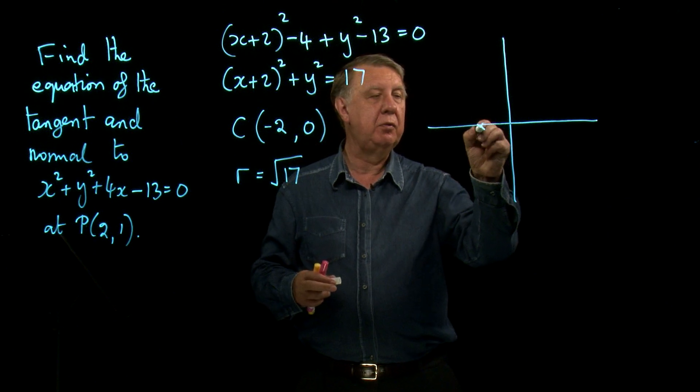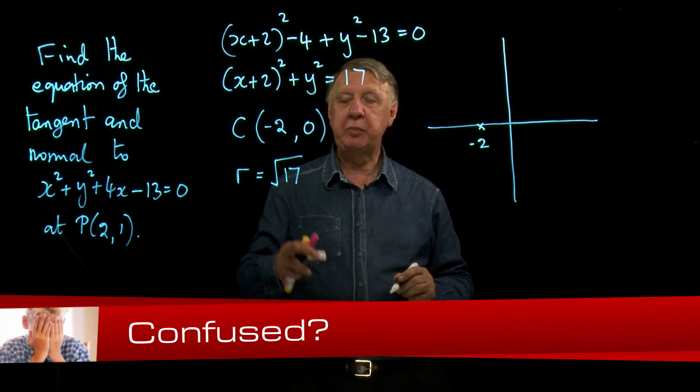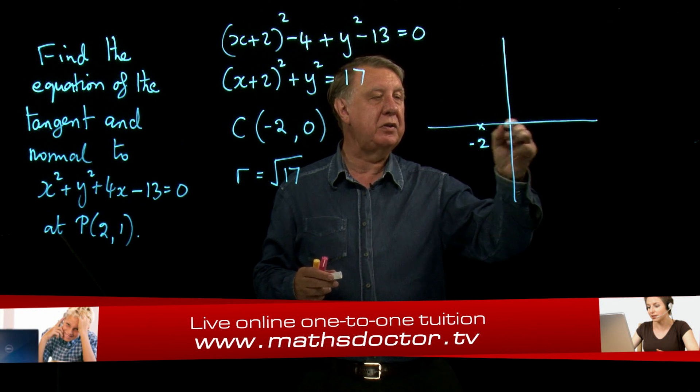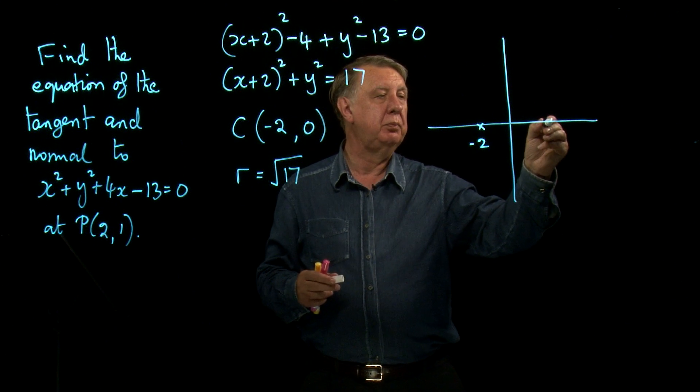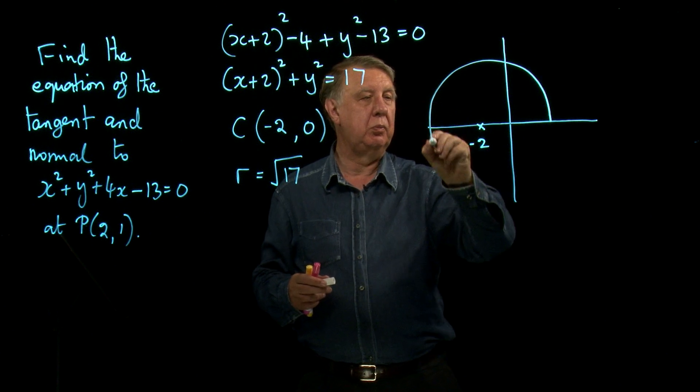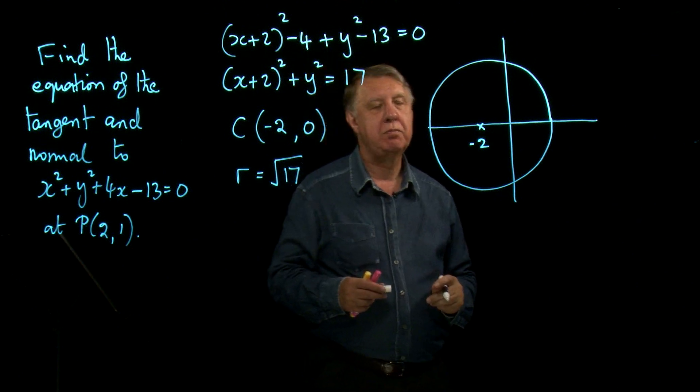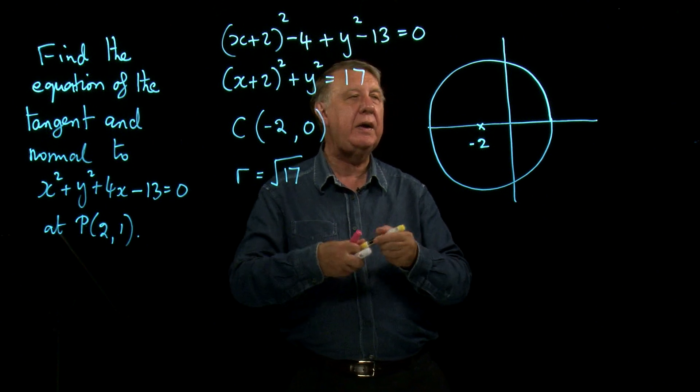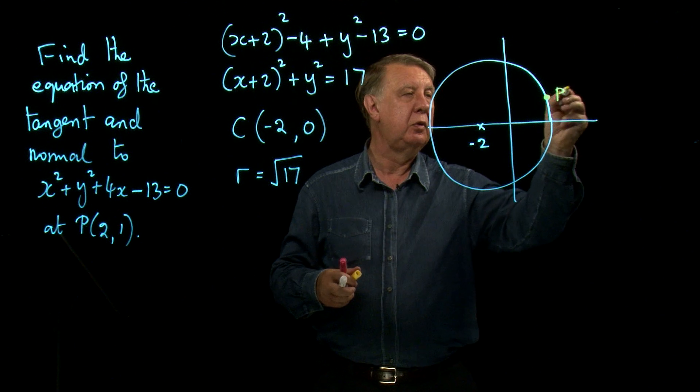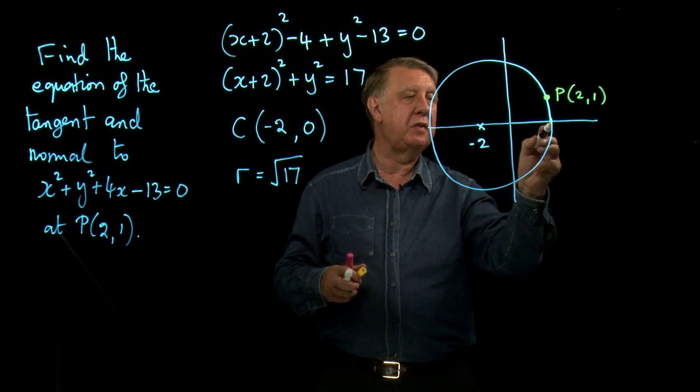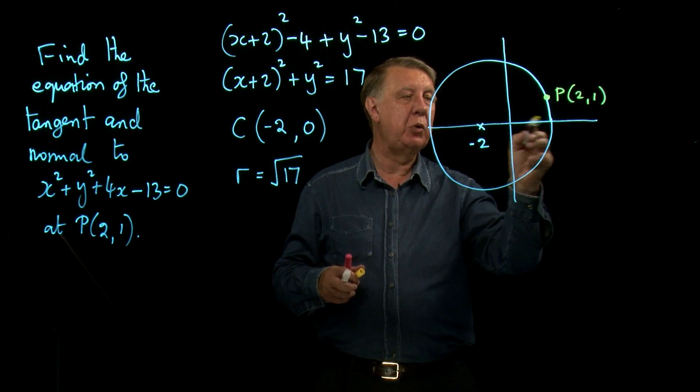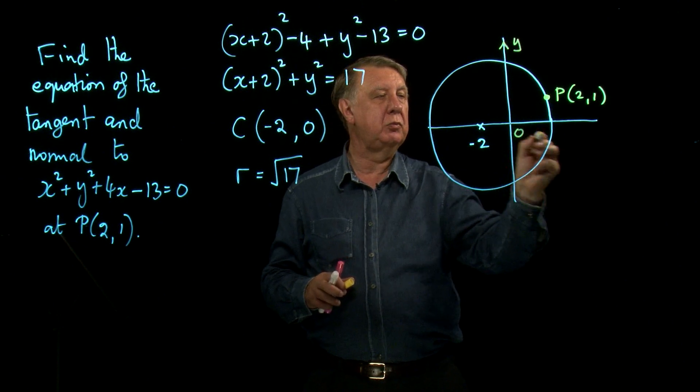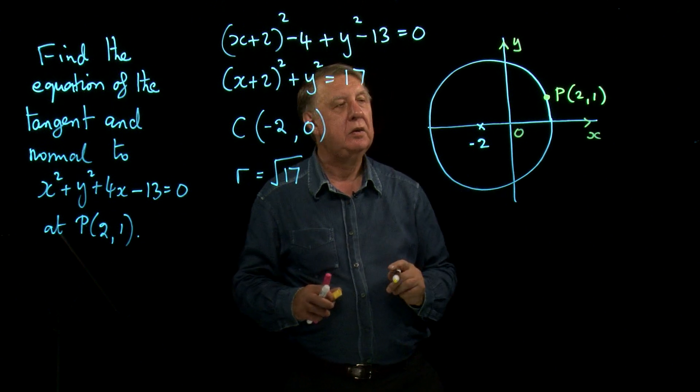So the center is here. Now because the radius is more than 4, that means that it's going to go out here to just beyond 2. So my circle will be like this. When I look at the point P, 2, 1, I can see straight away that it's in the right sort of place because I know that this point here is slightly more than 4 away from negative 2. So that looks right.